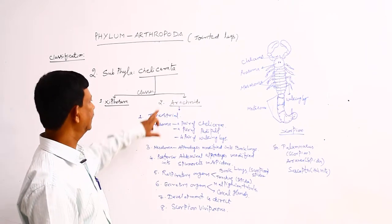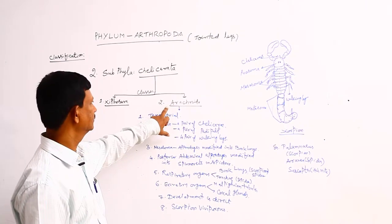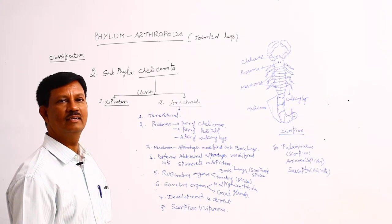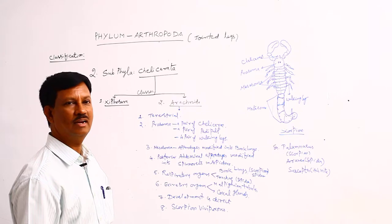Now we have to discuss the Arachnida characters. Arachnida animals are mainly terrestrial animals. These are found on land.